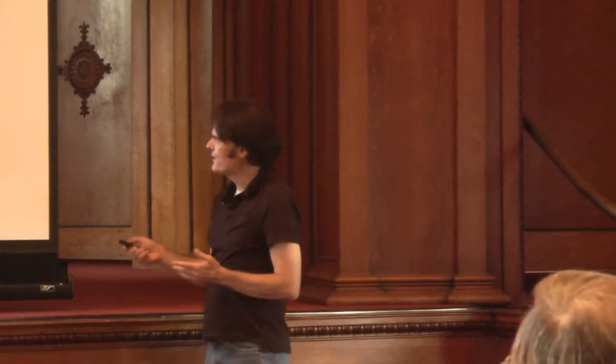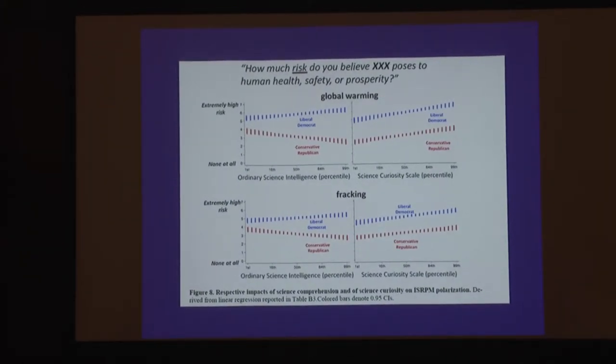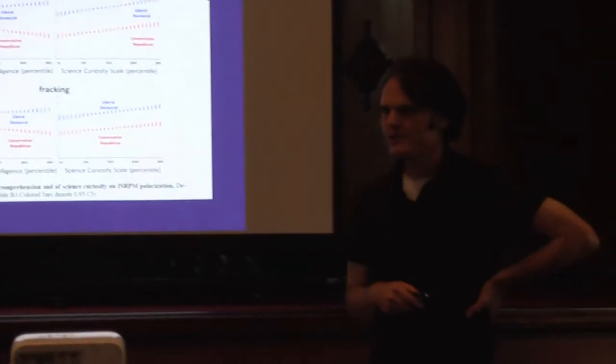Audience asks whether the collapse in differences between the two groups on less politically charged issues also occurs with science curiosity — do the two parallel curves become the same curve for issues like medical x-rays or nanotechnology? The speaker responds: we haven't looked as much at the full range of issues in this study — we've focused on politically contentious risk issues where science curiosity is moving people in the same direction. For those other issues, I suspect it wouldn't make a big difference, but I'm not sure. Polarization in itself is worth worrying about.